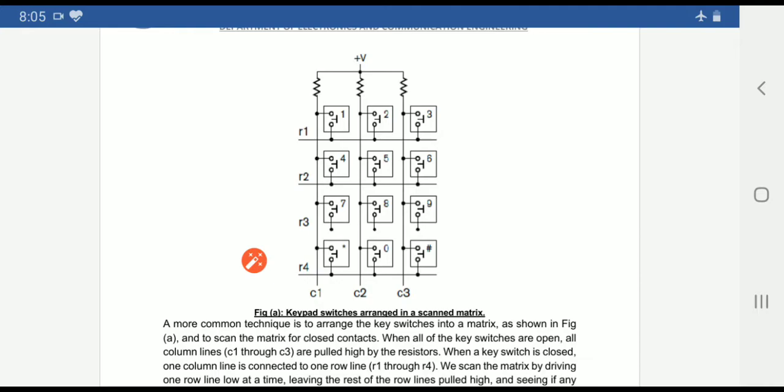So now how does this circuit work? Initially, when the switch is open, meaning no keypads are connected or no switch is connected, then all the columns are open with respect to rows. When the keypad switch is closed, one column is connected with one row which may be C1, C2, C3, or one row R1 to R4. Any one column is connected with any one row.